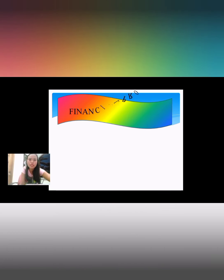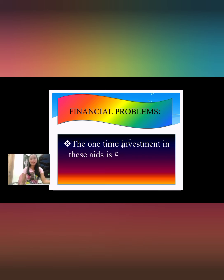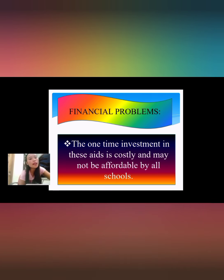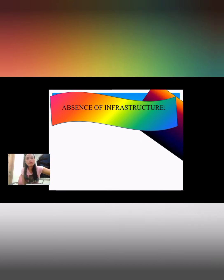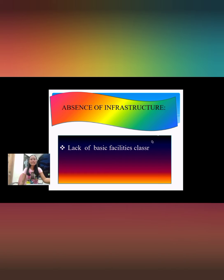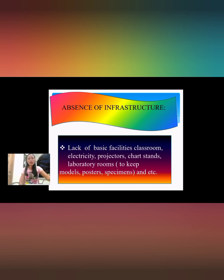Regarding financial problems — the one-time investment in these aids is costly and may not be affordable by all schools. Due to financial problems, some schools cannot provide teaching aids because of the high cost. Regarding the absence of infrastructure — it means a lack of basic facilities such as classrooms, electricity, projectors, chart stands, and laboratory rooms to keep models, specimens, and posters. Lack of electricity is one example of absent infrastructure.